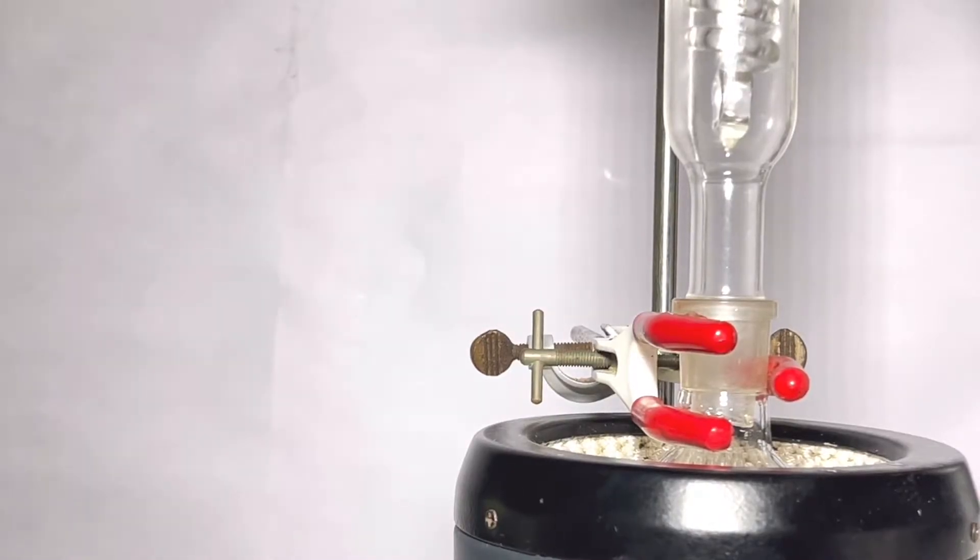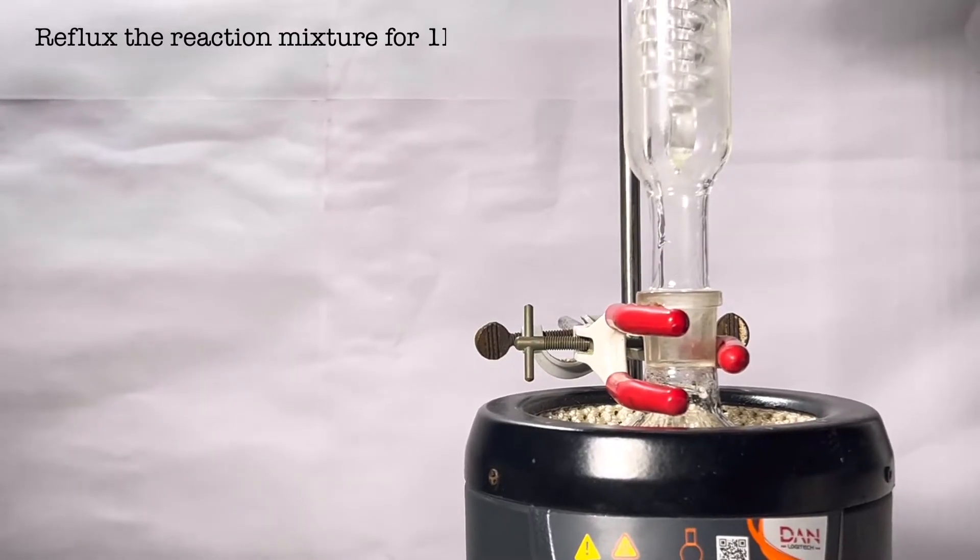The round bottom flask was equipped with a dimroth condenser and was placed in a heating mantle. The mixture was heated to reflux for one hour.